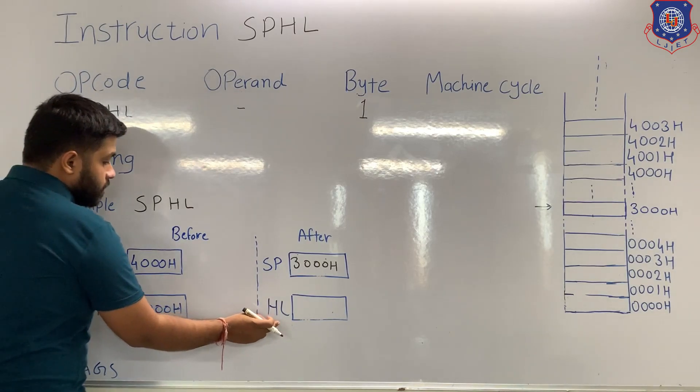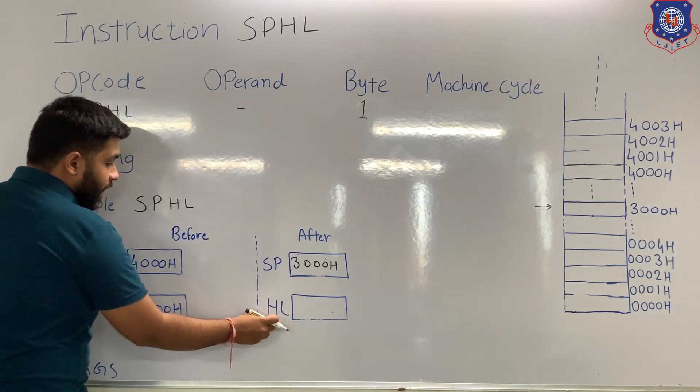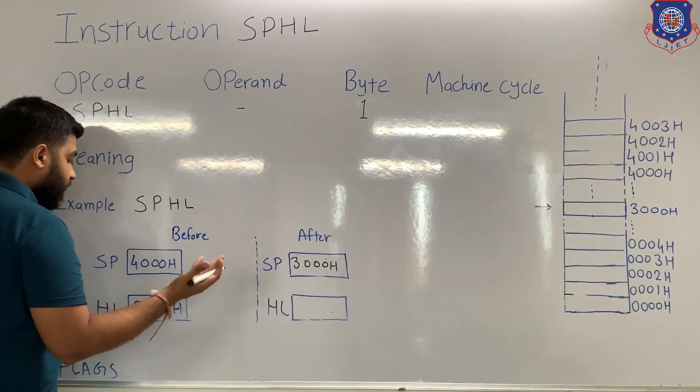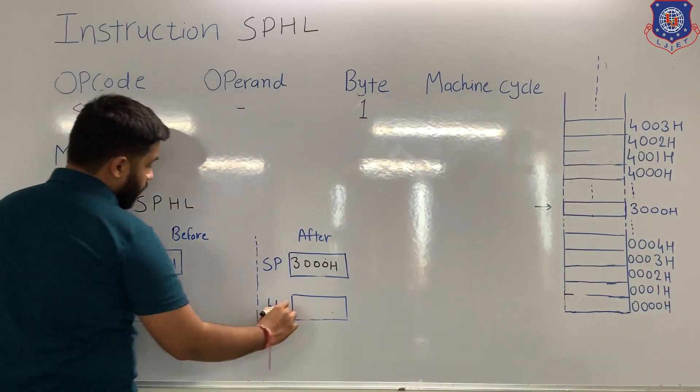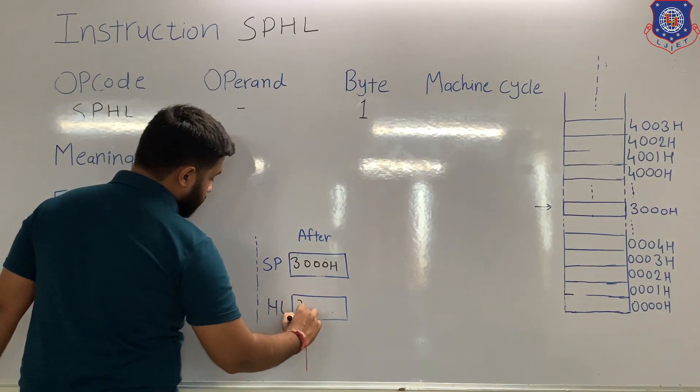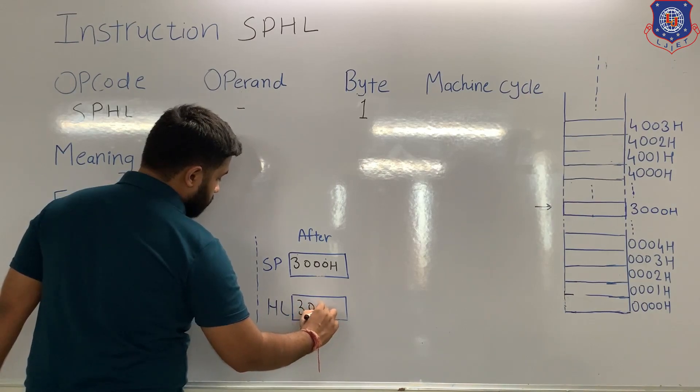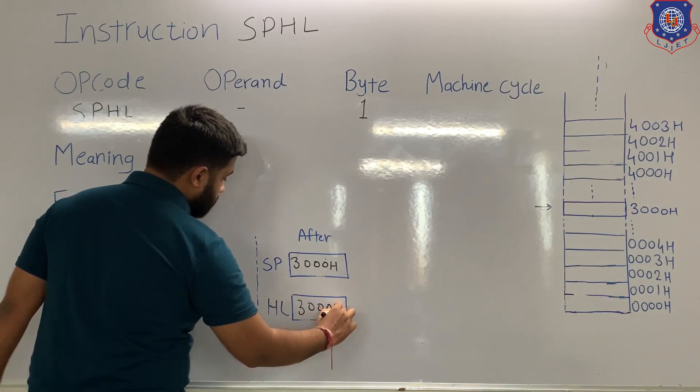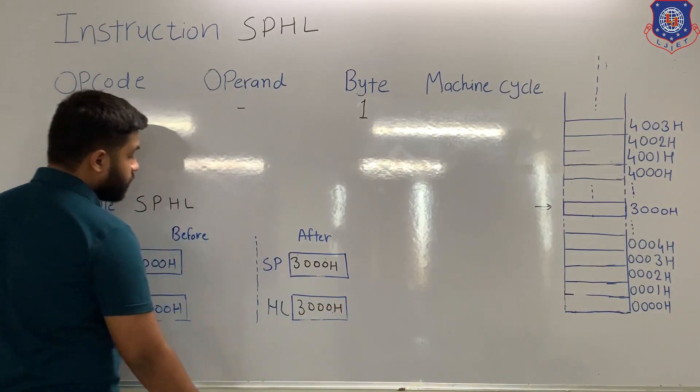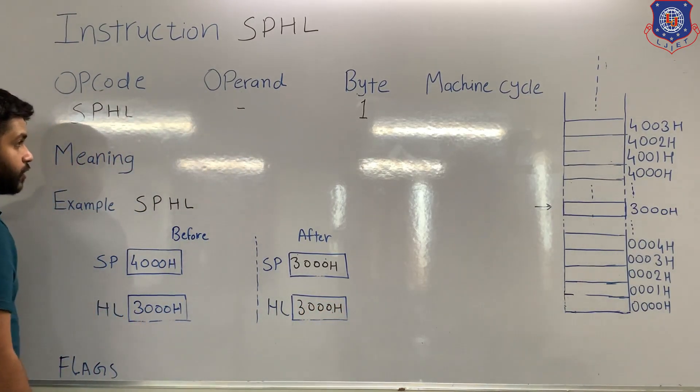What is the value of HL after the execution? The value of HL will remain the same — that is 3000H.